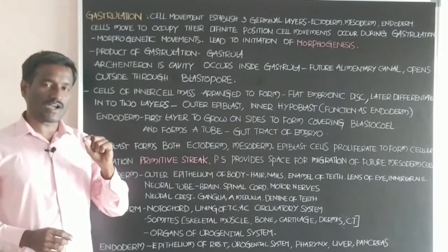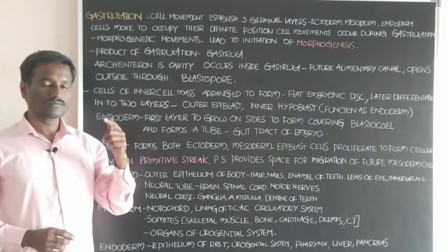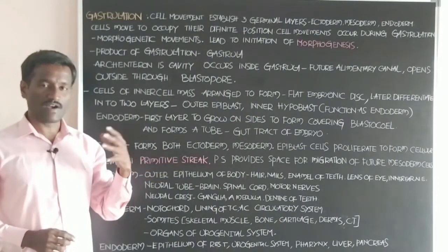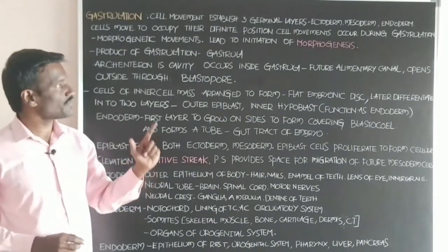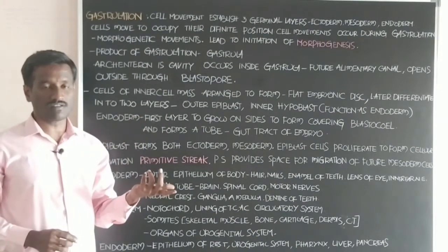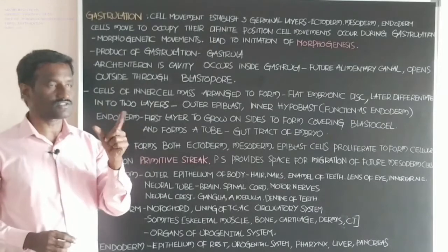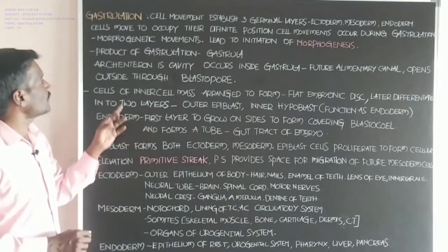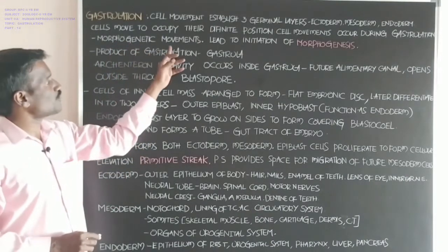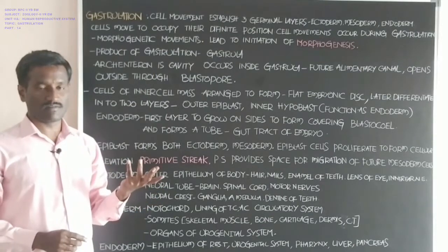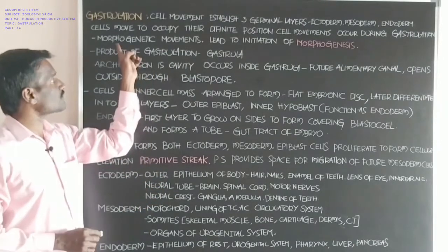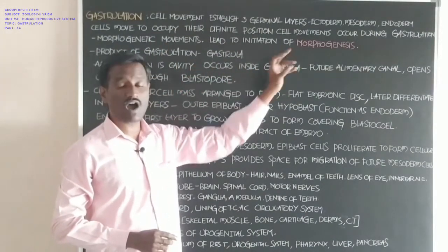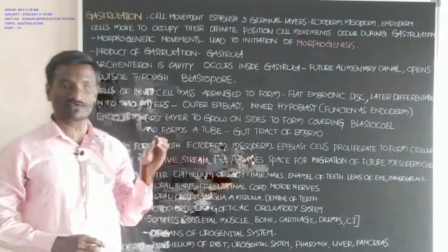Cells present in the embryonic disc undergo division, producing more cells. These cells show movement and go to their definite positions. This entire process of cellular movement occurs during gastrulation. Cellular movement is also called morphogenetic movement because it leads to the initiation of morphogenesis.